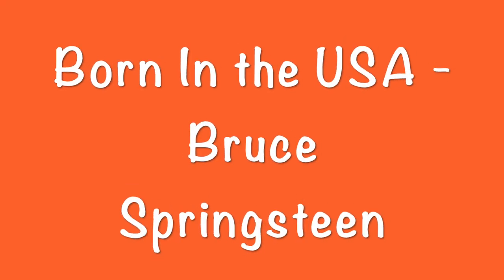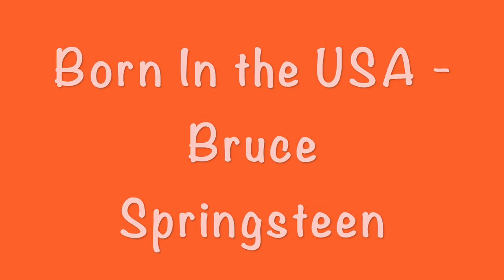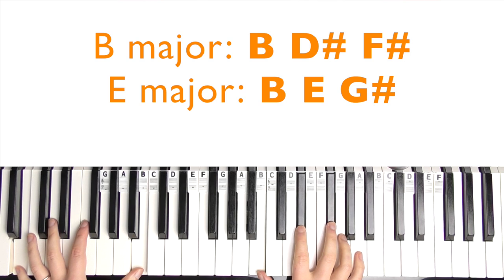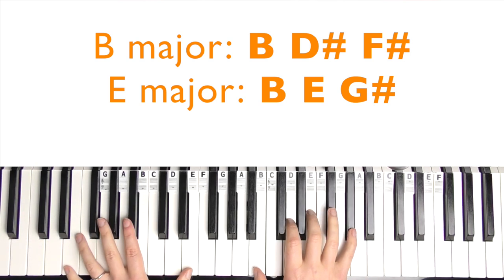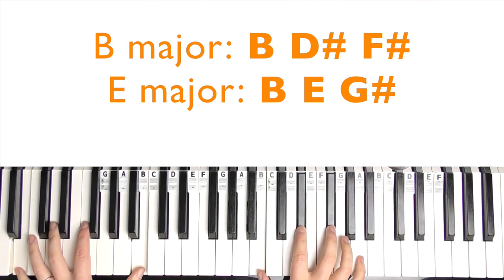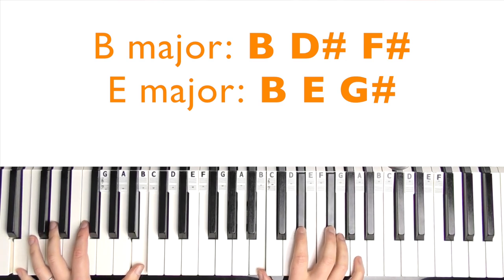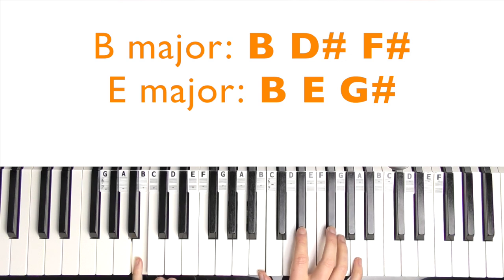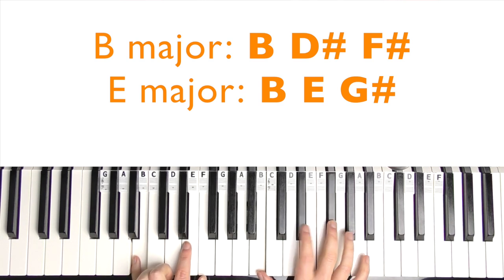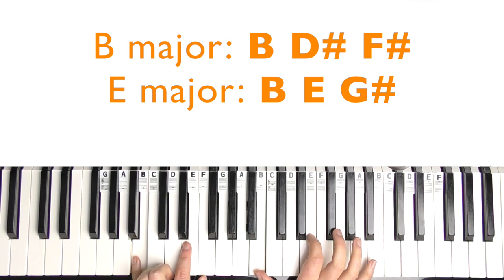So the first one in the list is Born in the USA by Bruce Springsteen. The two chords that we need is a B major and an E major. So the B major, we're going to play in root position, so it's B in the left hand and then B, D sharp and F sharp. And then to get to E major, you turn the left hand to E,